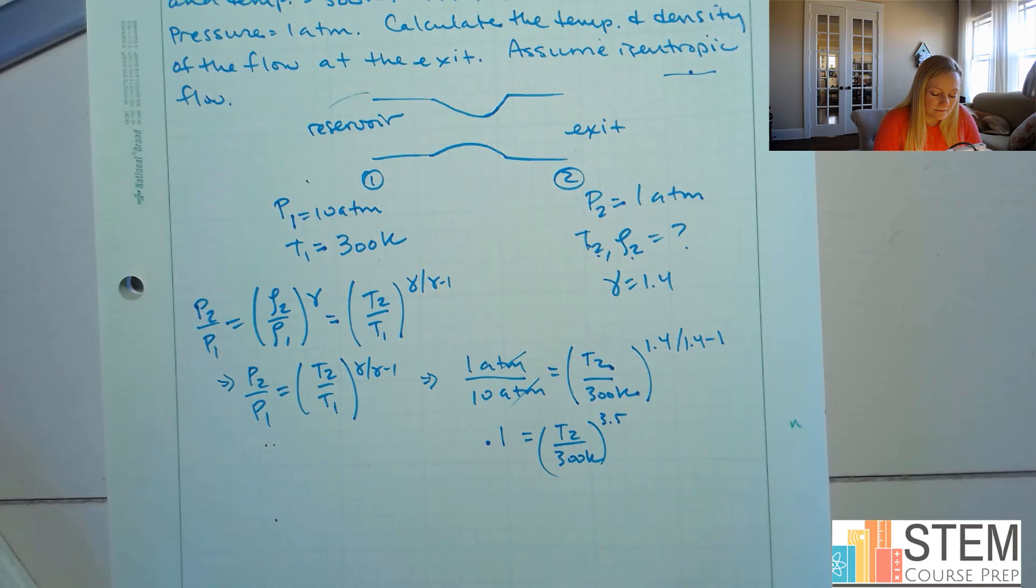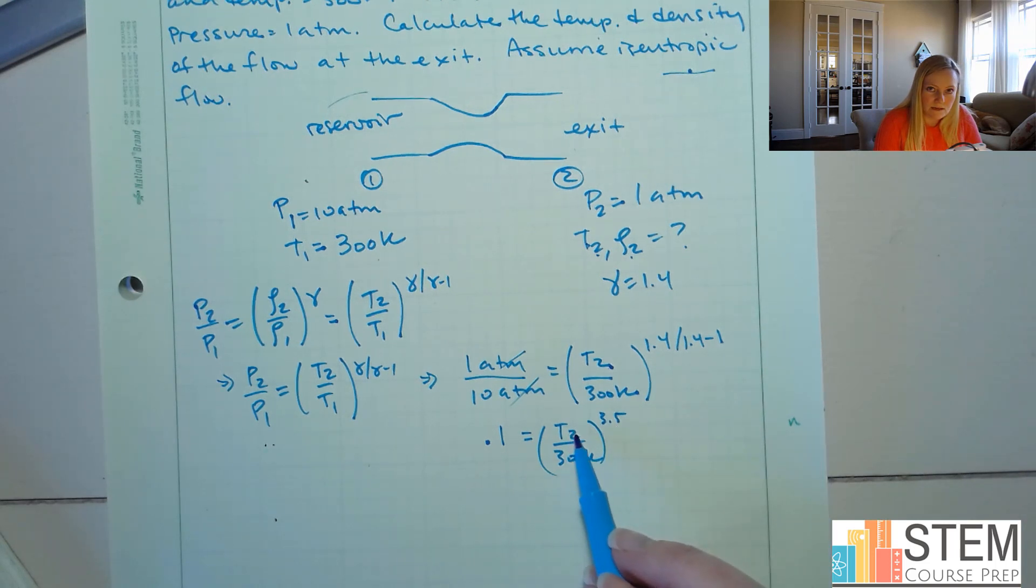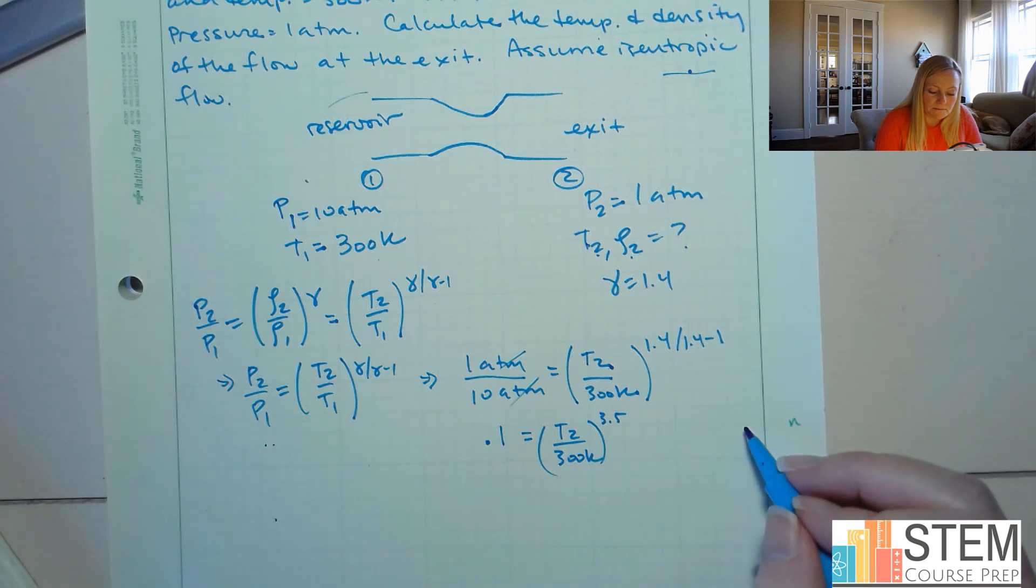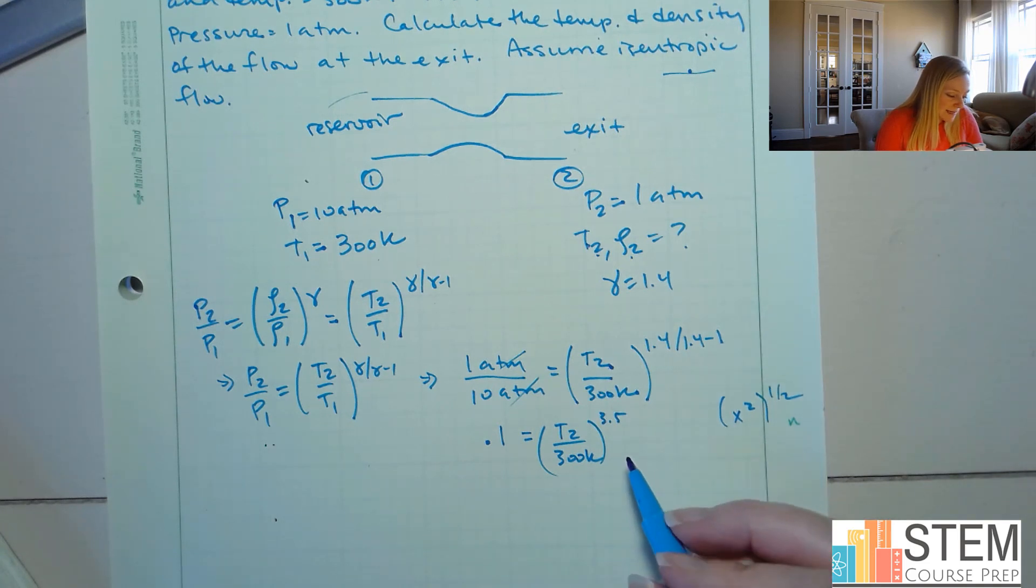All right, now, how do we get rid of this and solve for that? Y'all remember? So if you think about it, if I have X squared, when I do the square root, the square root is really a power of 1 over 2. All right, so we're going to do the same thing here.